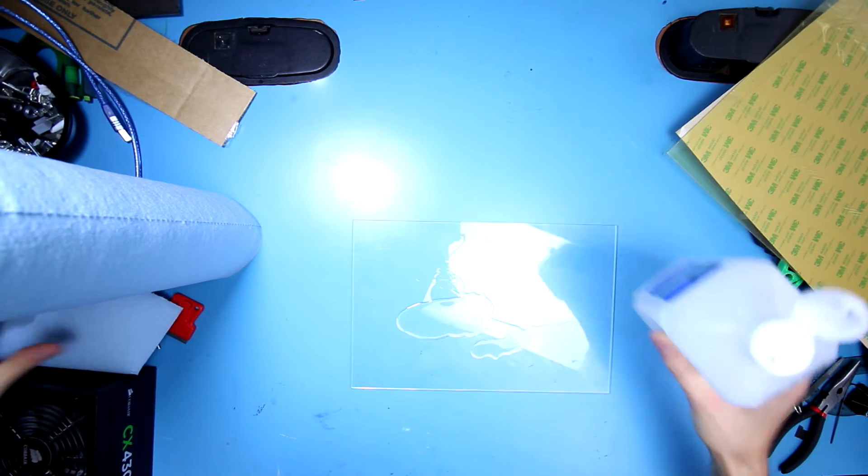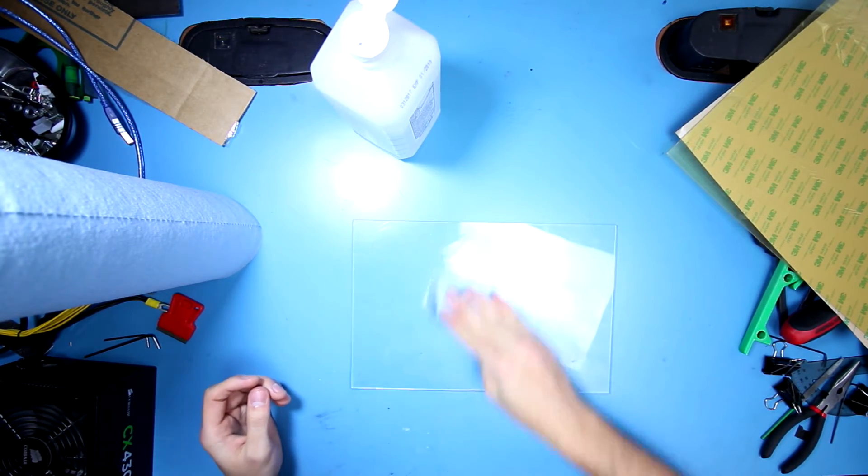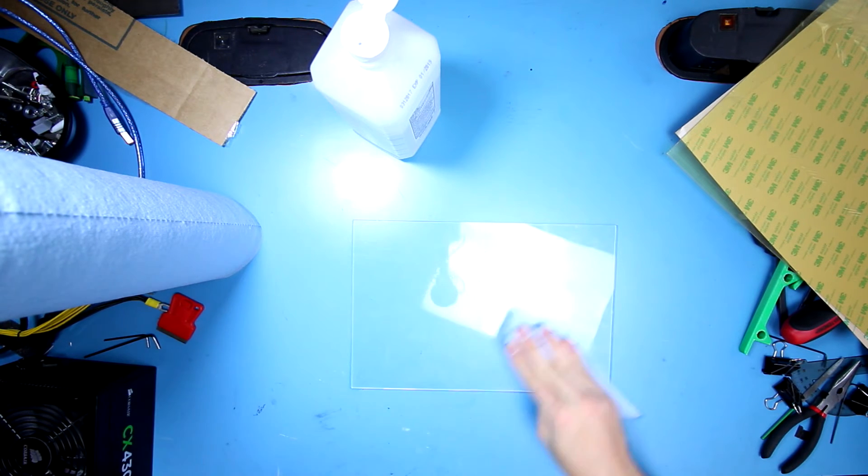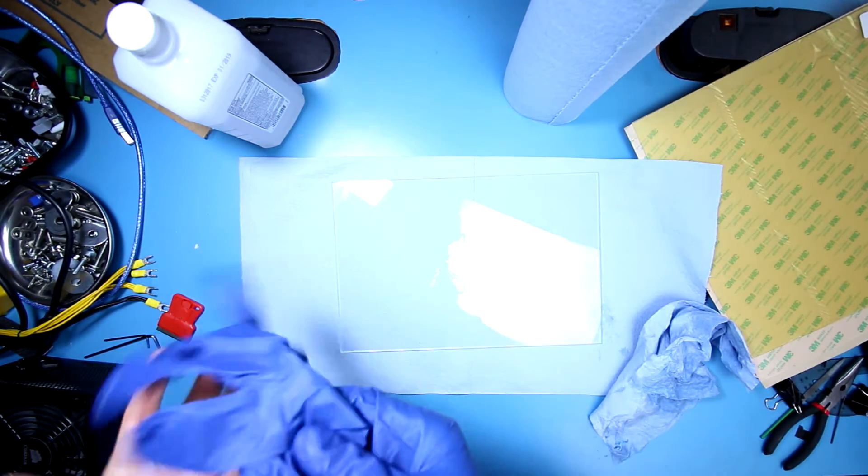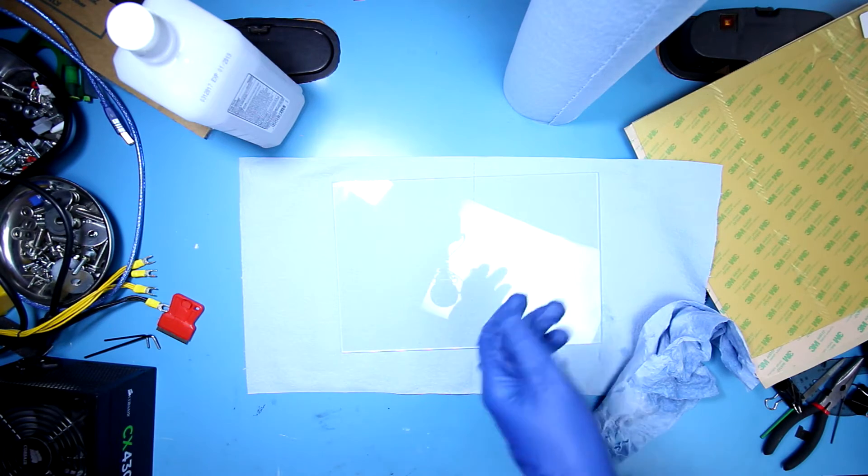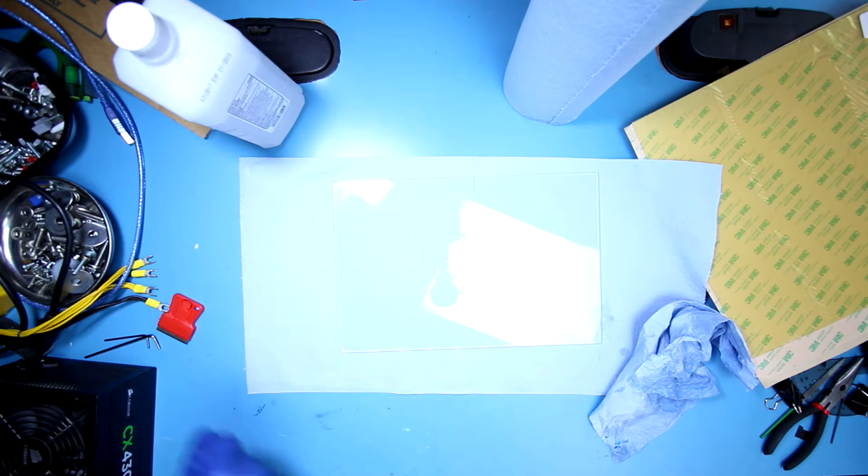What I want to do first, because this is super dirty, is clean off this glass. I'll probably do it one more time before I actually do the adhesive bit just to make sure everything's super clean when we apply. I forgot two other key things you will need: rubber gloves to keep fingerprints off the surfaces, and of course something to squeegee it on.